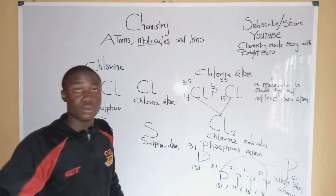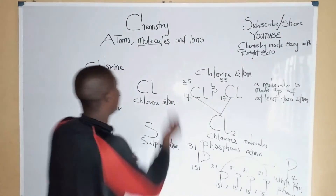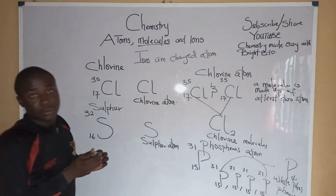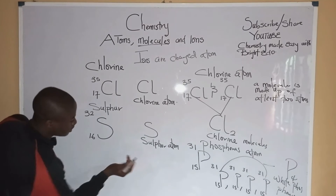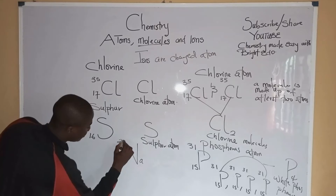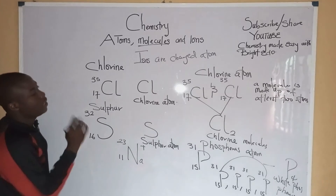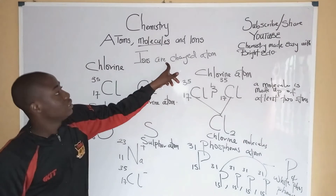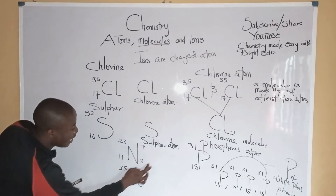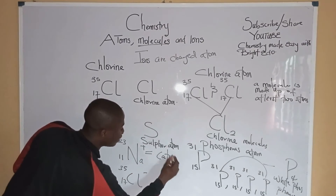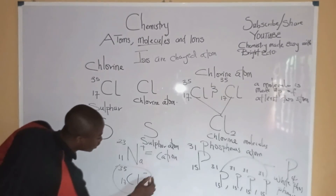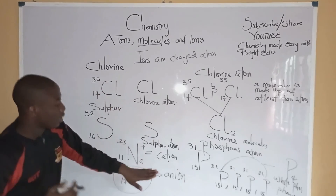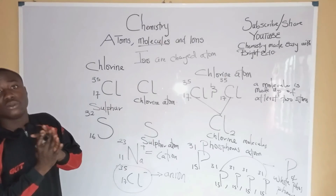Now let's move over to ions. What are ions? Ions are charged atoms — an atom with a charge is called an ion. For example, we have sodium (Na-23/11) positively charged, and also chlorine (Cl-35/17) negatively charged. When an ion is positively charged, it is called a cation. When an ion is negatively charged, it is called an anion.